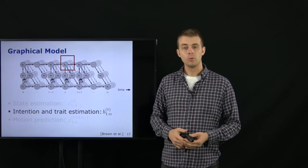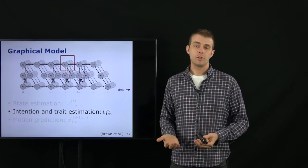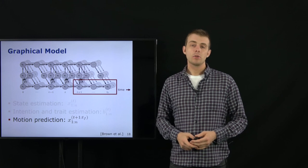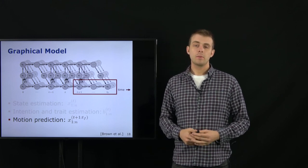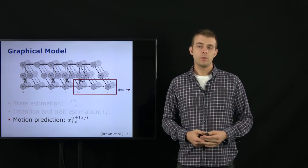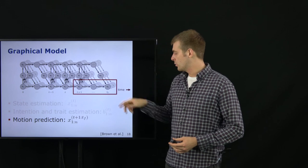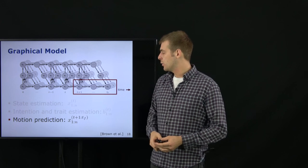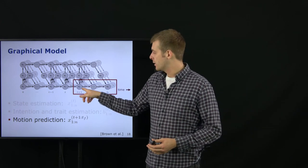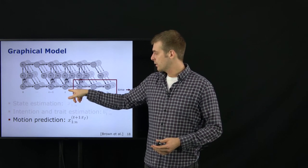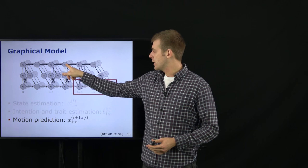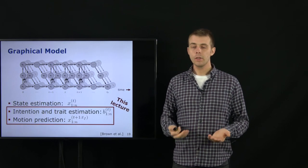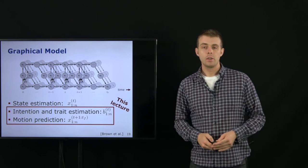The internal state can be used to integrate the navigational goals of others into ego behavior planning — for example, reasoning about where other traffic participants want to go. Finally, motion prediction aims at estimating the physical states of agents for future time steps, from t+1 up to a specific horizon t_f. This depends on the initial state, the control policy, and the internal states. In this lecture we will focus on intention and trait estimation as well as motion prediction.